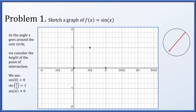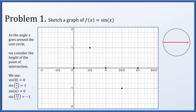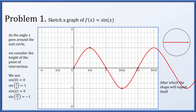Now as we keep rotating, we go down, slowing until we reach our minimum of -1. This is at an angle of 3π/2. The sine of 3π/2 is -1. We put (3π/2, -1) into our plot. Now if we keep rotating, the height of the point on the unit circle will come back up to 0. So we'll put (2π, 0) into our plot. If you sort of fill in the blanks, we'll get a curve like this. And the shape will simply repeat itself forever in both directions.